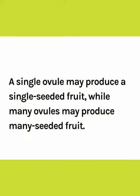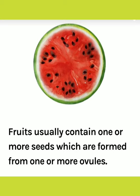A single ovule may produce a single-seeded fruit, while many ovules may produce a many-seeded fruit, as you can see in the picture. Here the black seeds are actually formed from many ovules, and the red part is actually the ovary of a flower which turns into fruit.